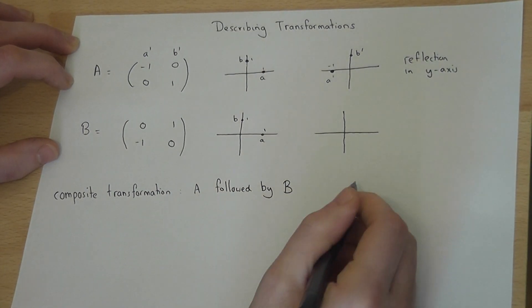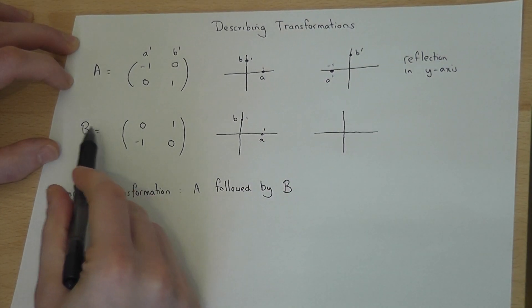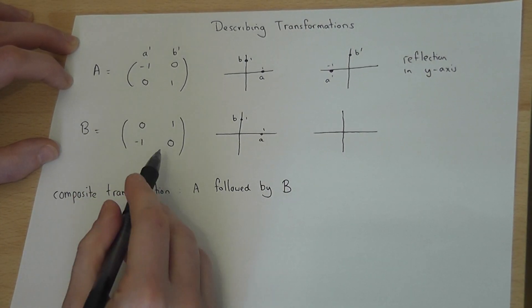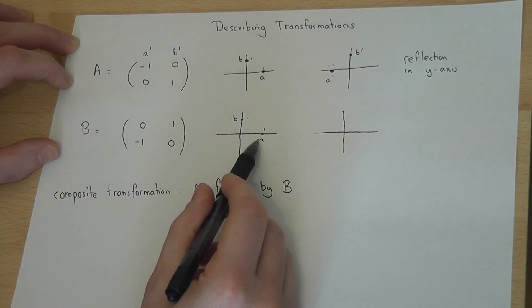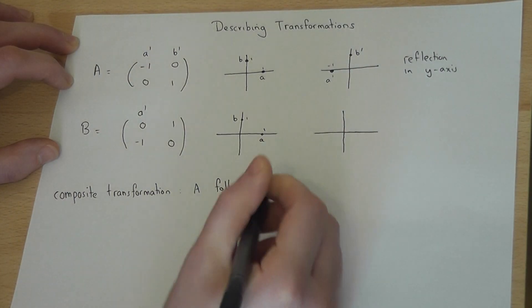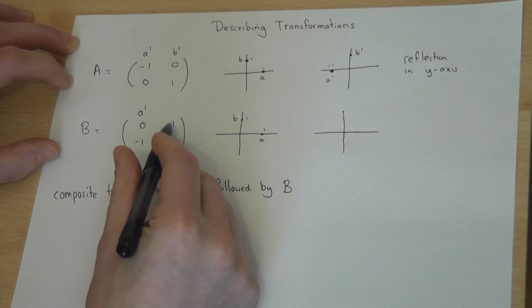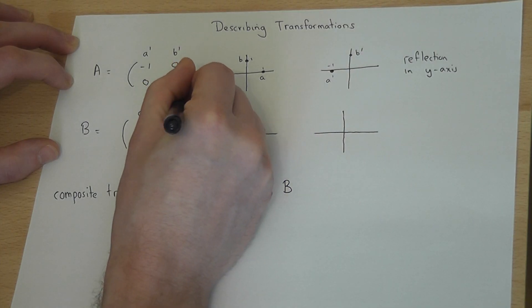To elaborate this further with a second example, consider B. Again, the first column is what happens to A, that's A dash. The second column is what happens to B, that's B dash.